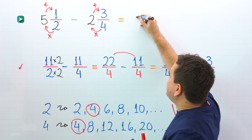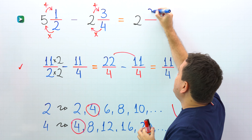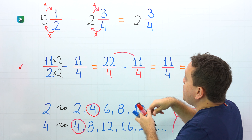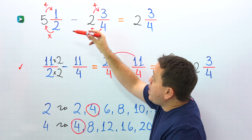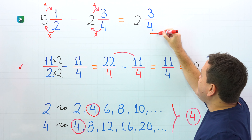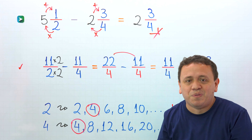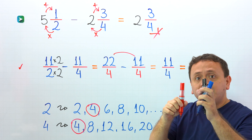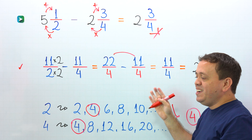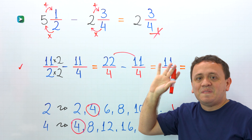We can put that mixed number in this place: 2 and 3 fourths. Therefore, 5 and 1 half minus 2 and 3 fourths gives us 2 and 3 fourths. That's all for today. If you want to learn more about mixed numbers, check out this playlist. And here you have another video. Have a good one, and see you next lesson.